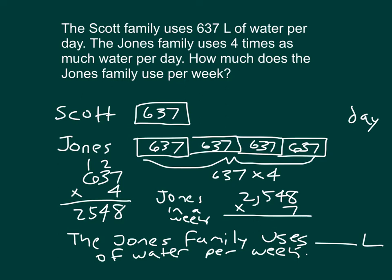Let's use the standard algorithm again. 7 times 8 is 56 — place 6, regroup 5. 7 times 4 is 28, plus 5 is 33 — place 3, regroup 3. 7 times 5 is 35, plus 3 is 38 — place 8, regroup 3. And 7 times 2 is 14, plus 3 is 17. So in a week, the Jones family uses 17,836 liters of water.